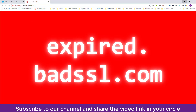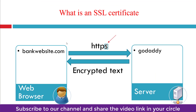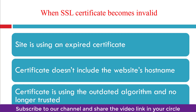Assume the website we use for testing or automation has a similar issue. When does an SSL certificate become invalid? A site may be using an expired certificate, just like what we saw. The certificate may not include the website's hostname — if the URL hostname and the certificate don't match, it will show as invalid. Also, if the certificate is using an outdated algorithm, it will be considered no longer trusted. These are the main reasons an SSL certificate becomes invalid.